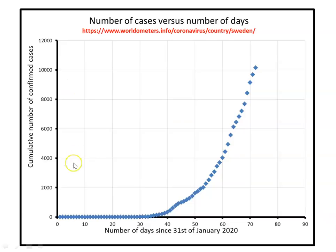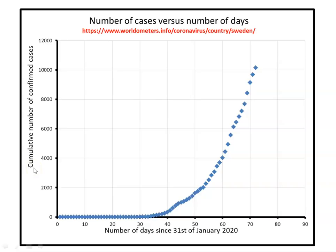Graphically, this is the cumulative number of confirmed cases, and you can see the pattern is exponential in its growth, which is what viruses do — they spread and grow exponentially. This is the number of days since the 31st of January. When we say confirmed cases, we're talking about the number of cases confirmed through testing by the Swedish health authorities and then published. With this sort of data, you only find the number of cases that you test for. If your testing is not wide enough, you don't pick up all cases and there could be many more in the community that are unknown.